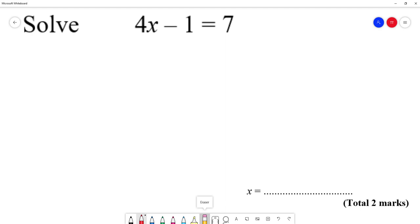So here we've got 4x minus 1 equals 7. So the opposite of minus 1 is plus 1. So we do plus 1 on the left hand side, plus 1 on the right hand side. The minus 1 and the plus 1 cancel out, so draw a line through them. So we end up with 4x. 7 plus 1 is 8.